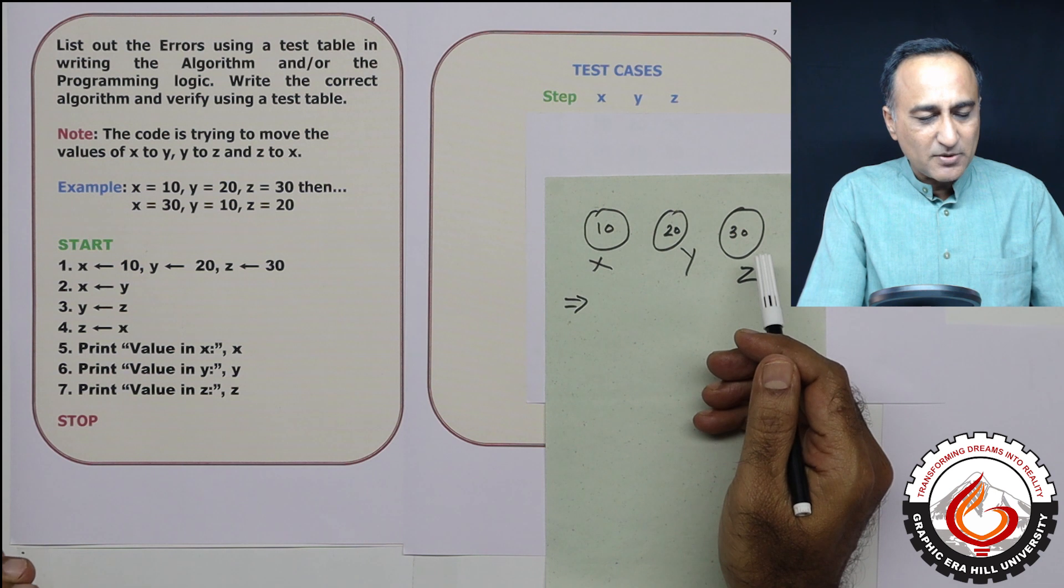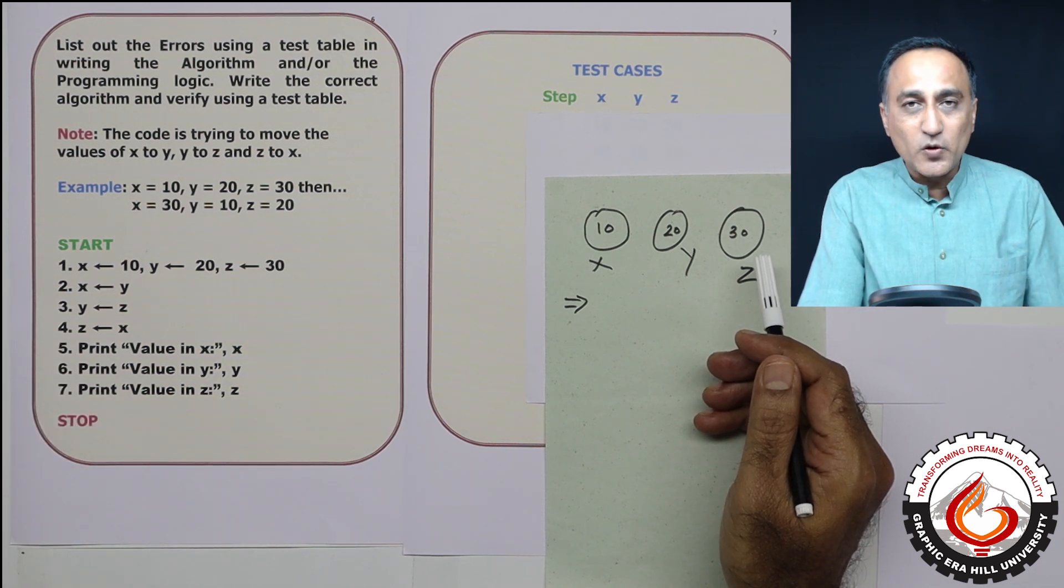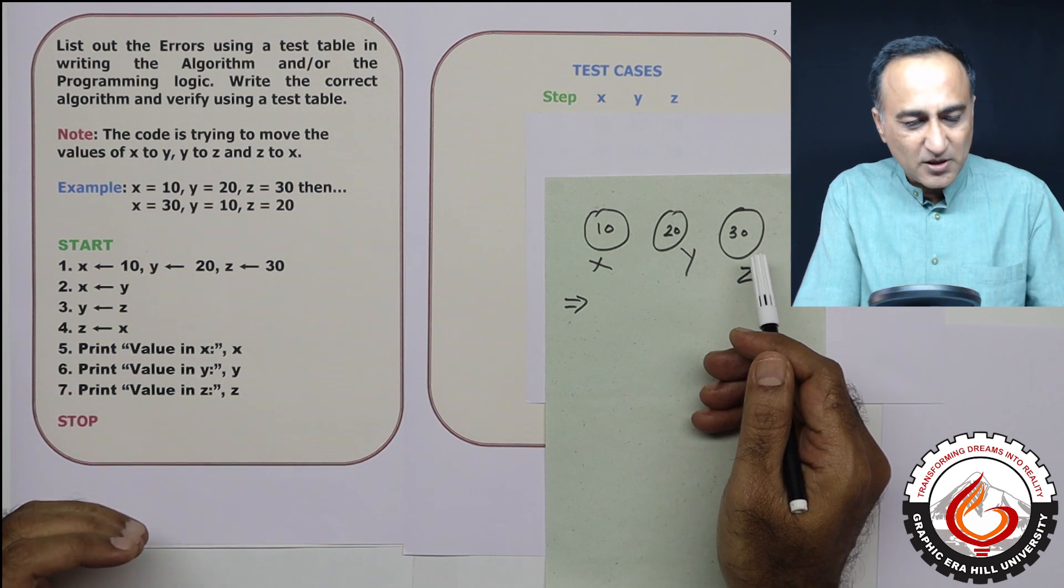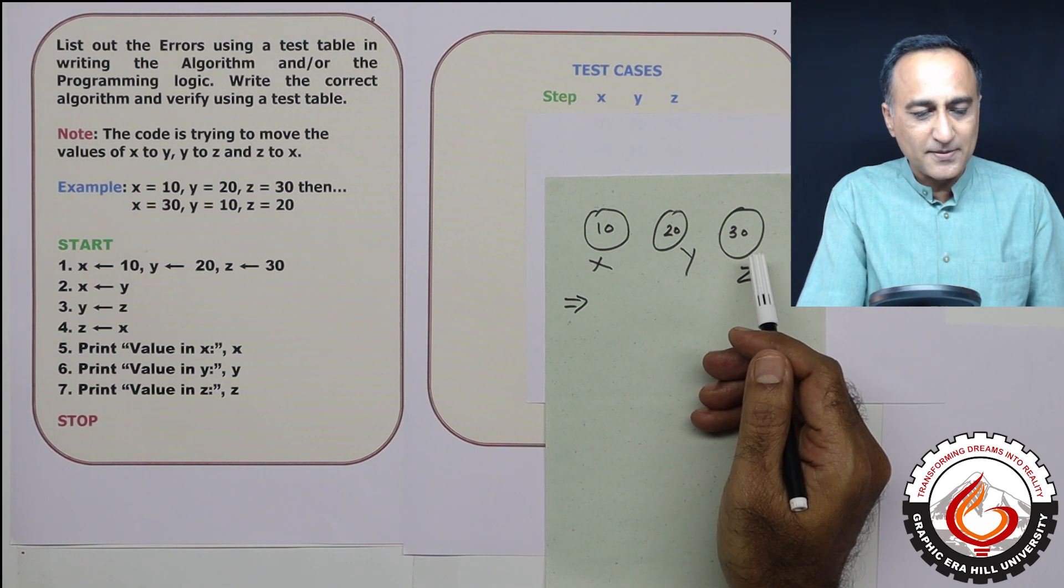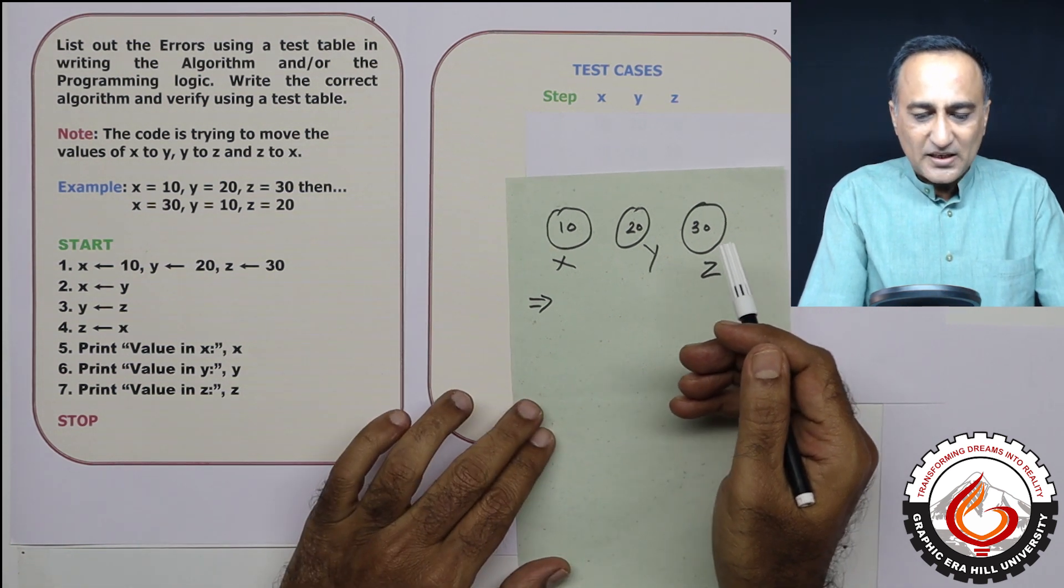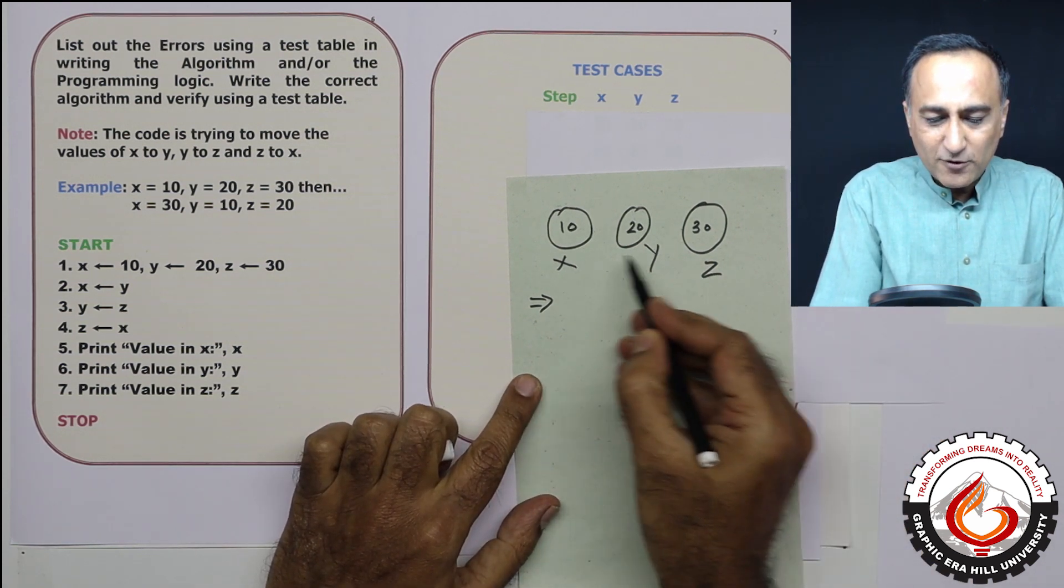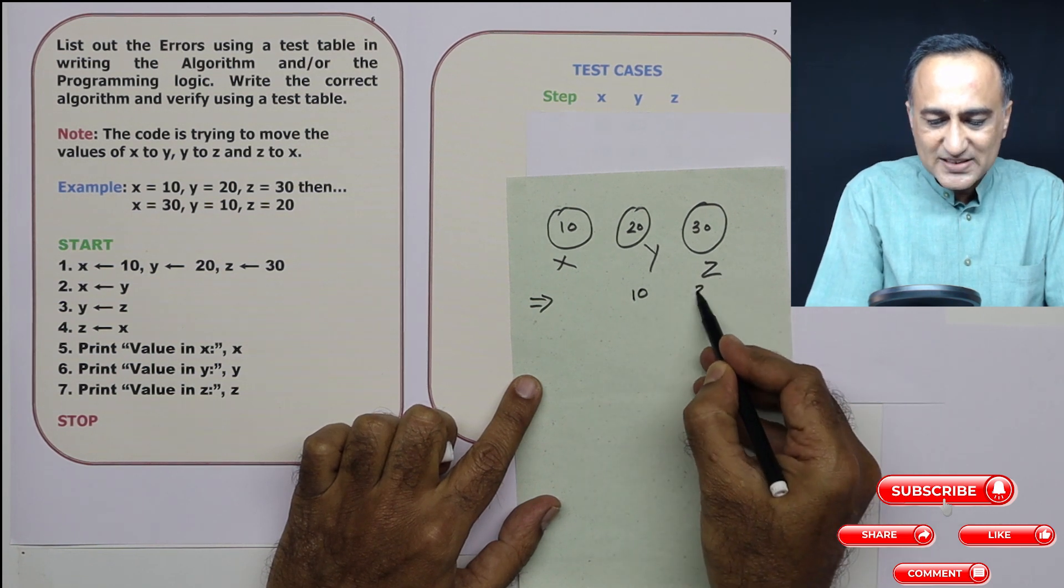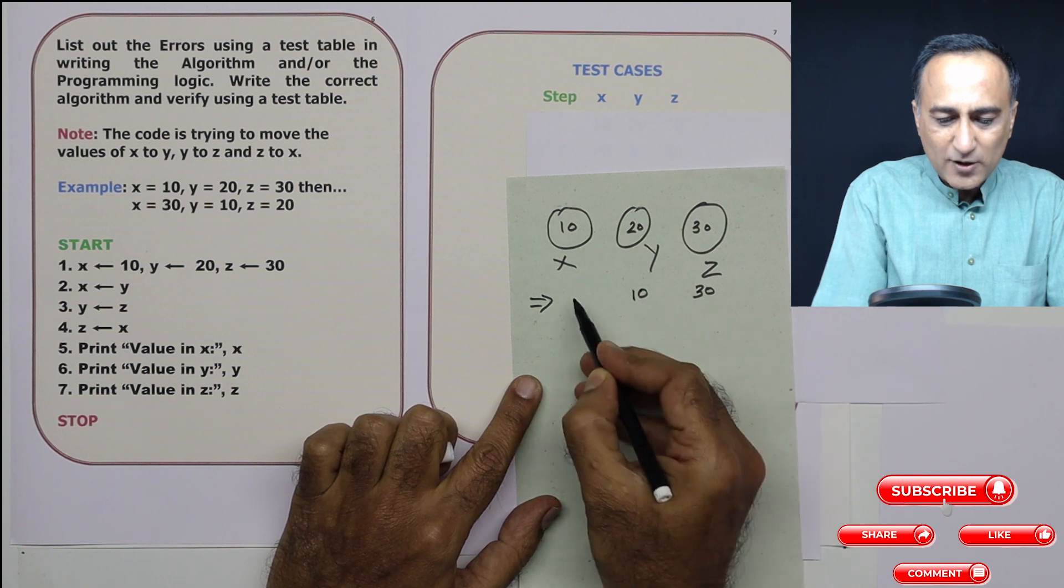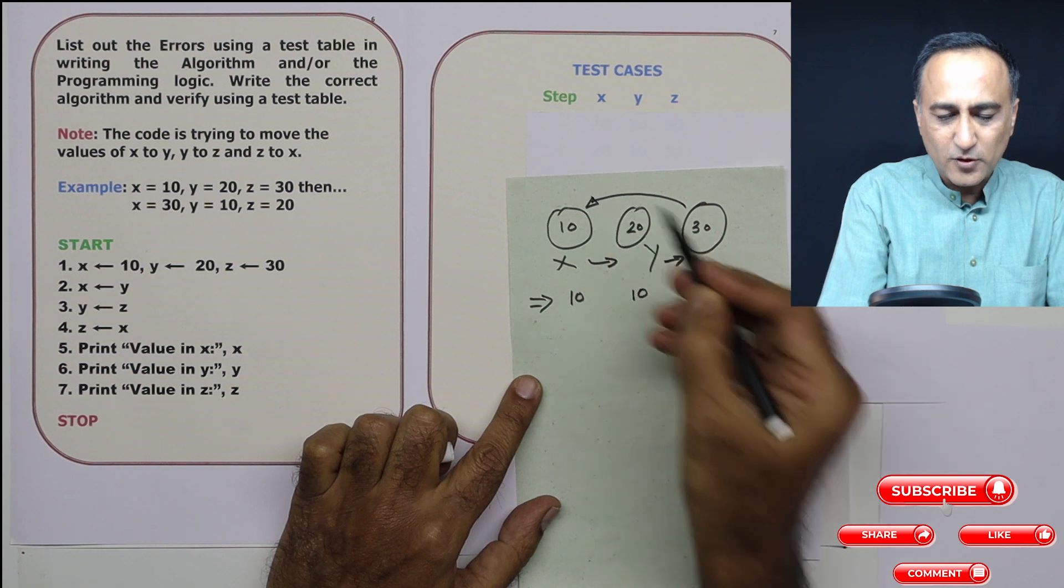So for example if x is 10, y is 20 and z is 30, I want x to be equal to 30, take the value of z, y to take the value of x which is 10 and z to take the value of y which happens to be 20. So it's kind of this fellow going here, this fellow going here and this fellow going here.